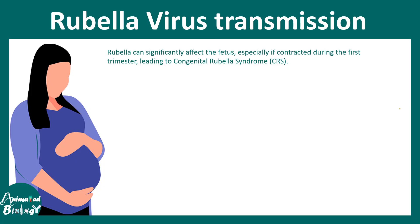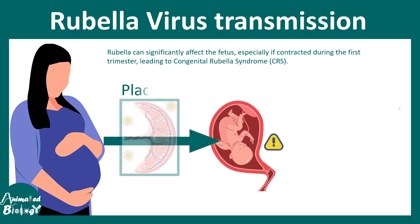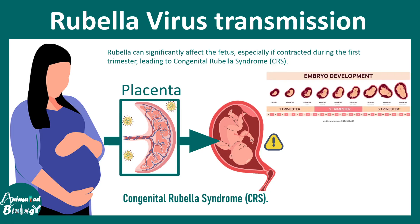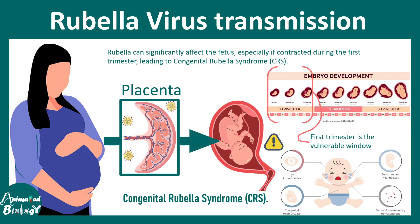One of the biggest challenges with rubella is its vertical transmission from mother to fetus via the placenta. Rubella can cross the placental barrier and affect the fetus, with the first trimester being the most vulnerable period. In babies, there could be eye and cardiac abnormalities, hearing loss, and dermal rashes which mimic blueberry marks — known as blueberry rashes.